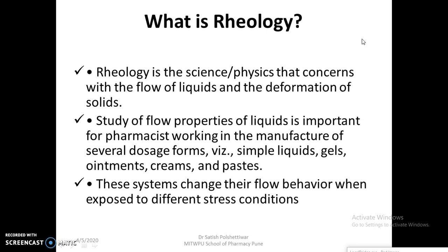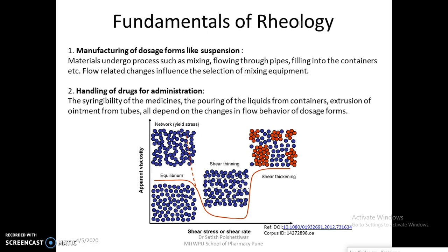The study of flow properties of liquids is important for pharmacists working in the manufacture of dosage forms, since systems change their flow behavior when exposed to different stress conditions. In manufacturing dosage forms like suspensions, pharmacists undergo processes like mixing, flowing through pipes, and filling into containers. Syringability, pouring of liquid from containers, and extrusion of ointment from tubes all depend on the flow behavior of dosage forms.